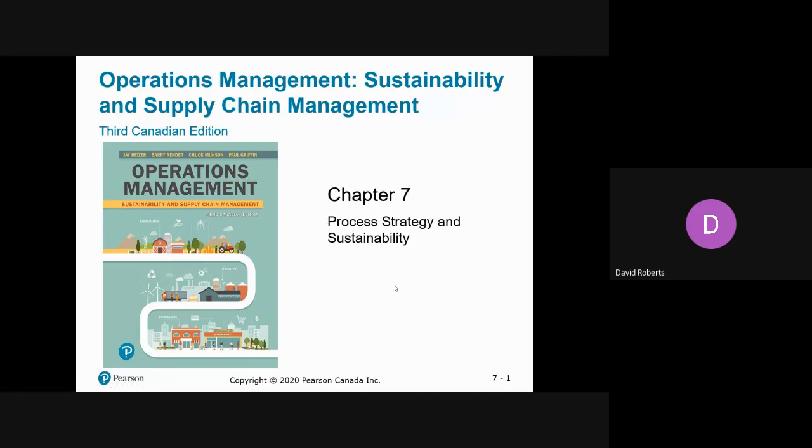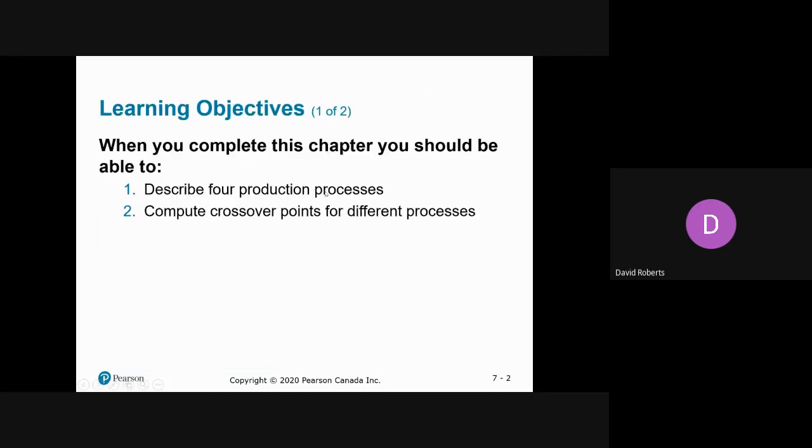Chapter 7 covers process strategy and sustainability. We're going to talk about different types of production processes and calculate crossover points for different processes. Crossover points are where you go from a small machine to a medium-sized machine or medium to large machine based on fixed and variable costs.